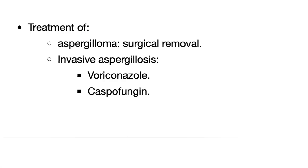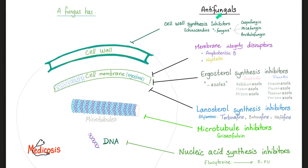Treatment depends on the type. For aspergilloma: if asymptomatic, observe; if symptomatic with hemoptysis, surgically remove it. For invasive aspergillosis, the number one drug of choice is voriconazole — that's an exam question. Second choice is caspofungin, an echinocandin that inhibits the fungal cell wall. Voriconazole is an azole that works as a cell membrane inhibitor by blocking ergosterol synthesis. Other antifungals include amphotericin B, nystatin, griseofulvin (microtubule inhibitor), and flucytosine (nucleic acid synthesis inhibitor, which generates 5-FU).